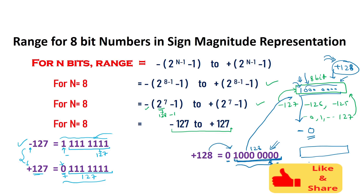I hope you have understood how to represent a given number in signed magnitude representation and how to interpret a given binary number using this form. If you have any questions, comments, or suggestions, please write them in the comment box. Please like and share this video, and subscribe to the channel. The full playlist on number systems and data representation is in the description below. See you in the next video on one's complement and two's complement.